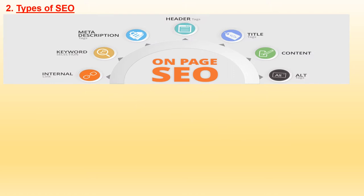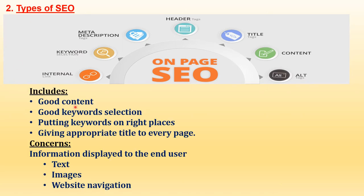On-page SEO refers to the tactics you use on your website to help it rank better, including everything from the technology you use to build the site to the way you use words on the page. It includes providing high-quality, genuine content; good keyword selection; putting keywords in the right places; and giving appropriate titles to every page. Google crawlers look for the URL, title tags, meta tags, and internal links within the website.